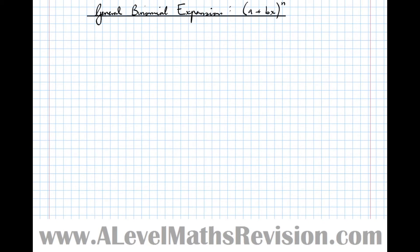In a previous video, we had a look at the general binomial expansion where the first number in the bracket was 1. So what we're going to do is extend this idea now to brackets where the first number isn't 1.